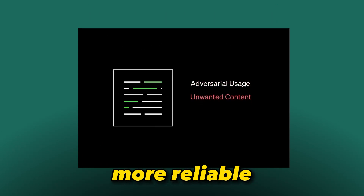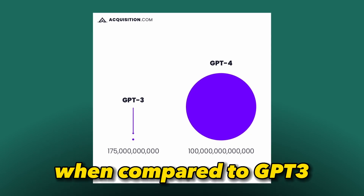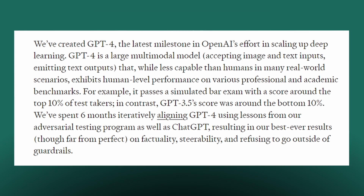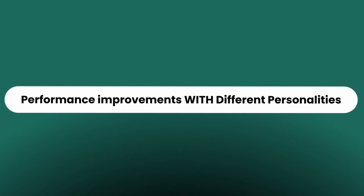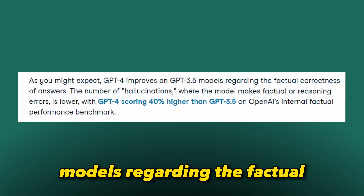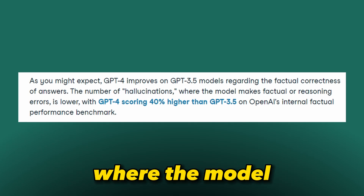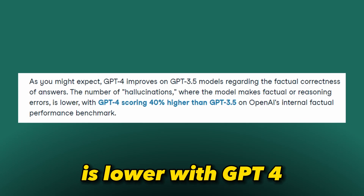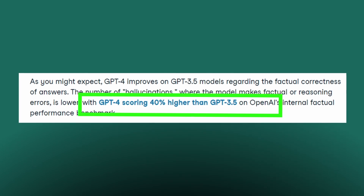OpenAI also stated that GPT-4 is more reliable, creative, and generally able to handle more nuanced instructions compared to GPT-3. Additionally, GPT-4 improves on GPT-3 models regarding factual correctness — the number of hallucinations, where the model makes factual or reasoning errors, is lower, with GPT-4 scoring 40% higher than GPT-3.5 on OpenAI's internal factual performance benchmark.